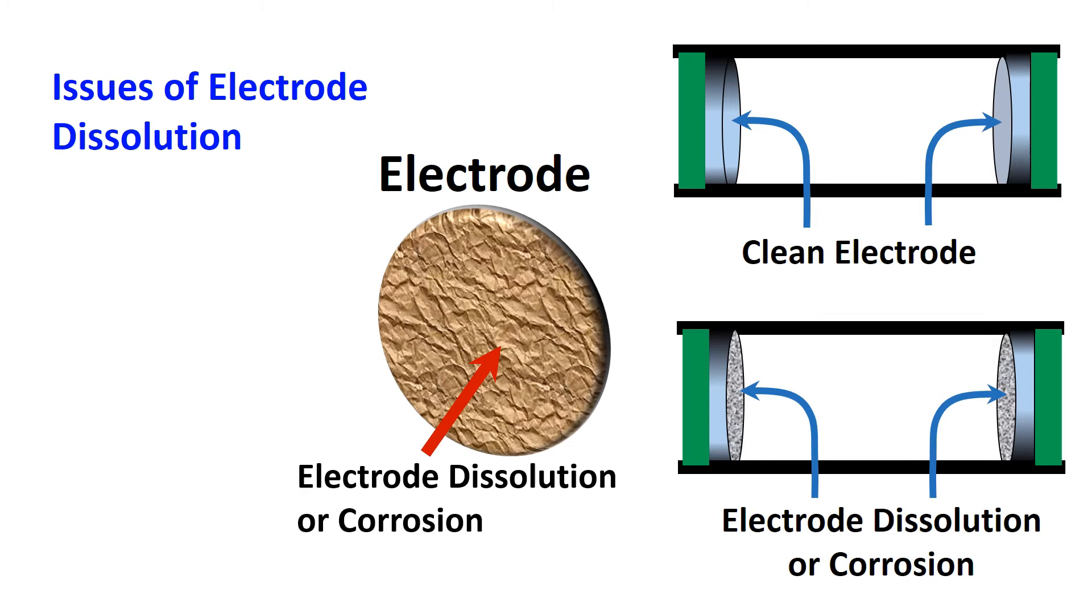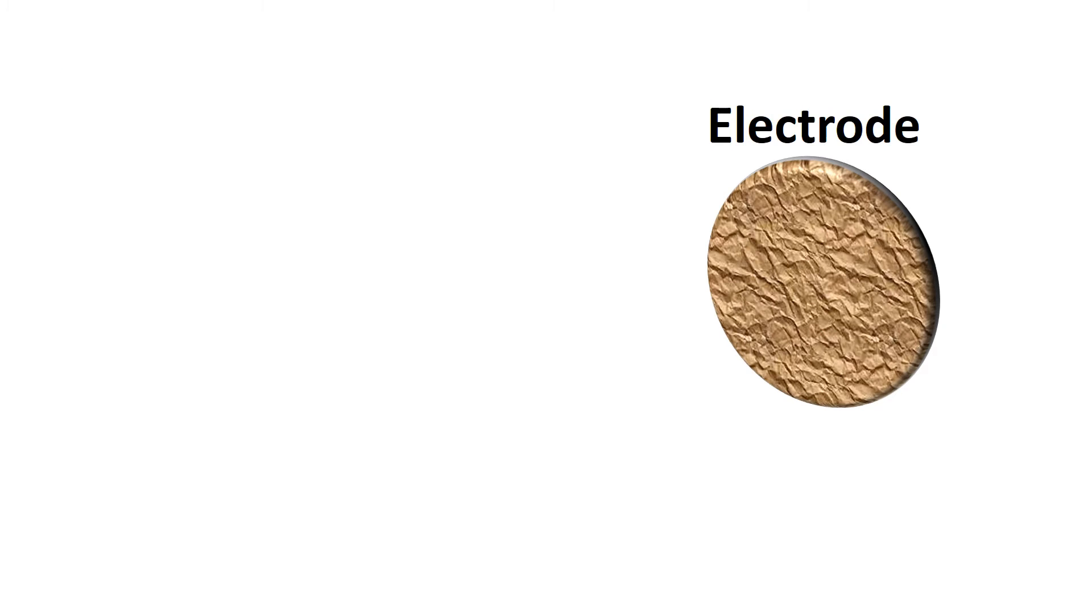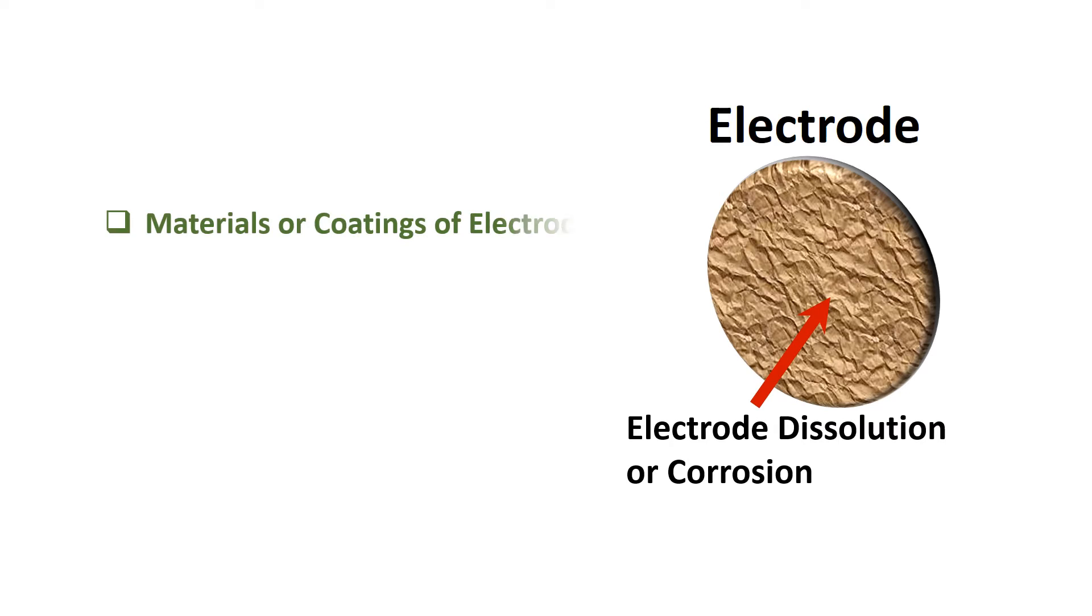Electrode dissolution could affect the quality of the food product by changing its color, nutritional, and sensory quality, and can cause contamination. Any decay or corrosion of electrodes should be studied since it could shorten the lifetime of electrodes and it can contaminate the food. Corrosion or dissolution of electrodes depends on the materials or coating of electrodes, current density, temperature, salinity or ionic strength, and viscosity of a product.